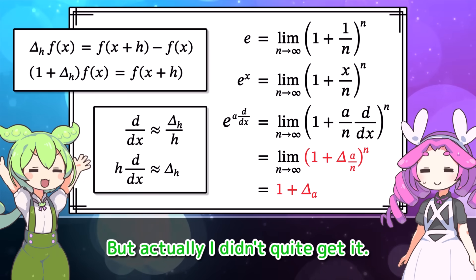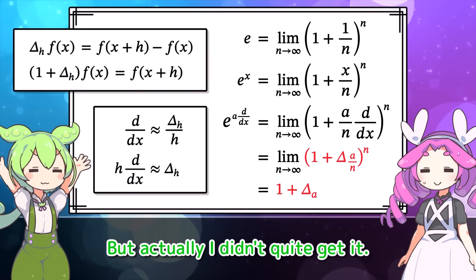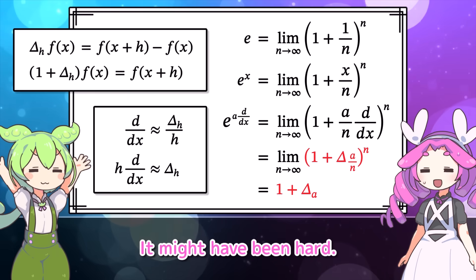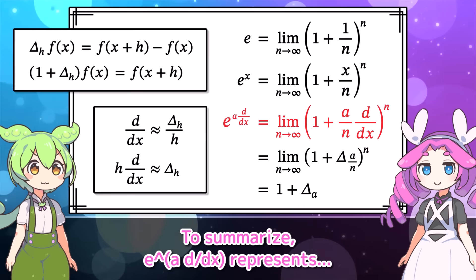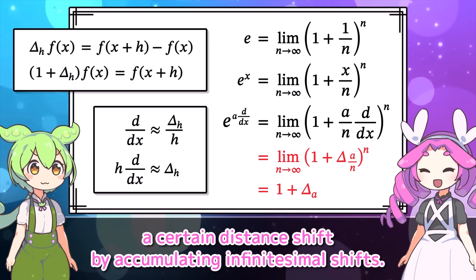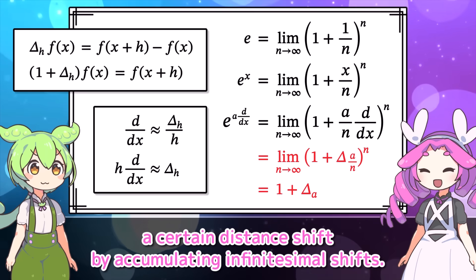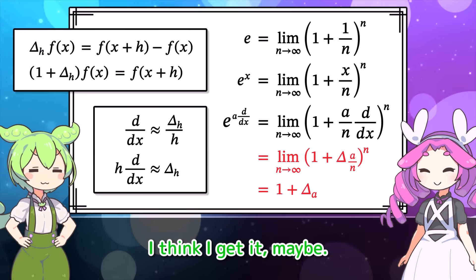That's amazing. But actually, I didn't quite get it. It might have been hard. To summarize, E to the A·D by DX represents a certain distance shift by accumulating infinitesimal shifts. I think I get it, maybe.